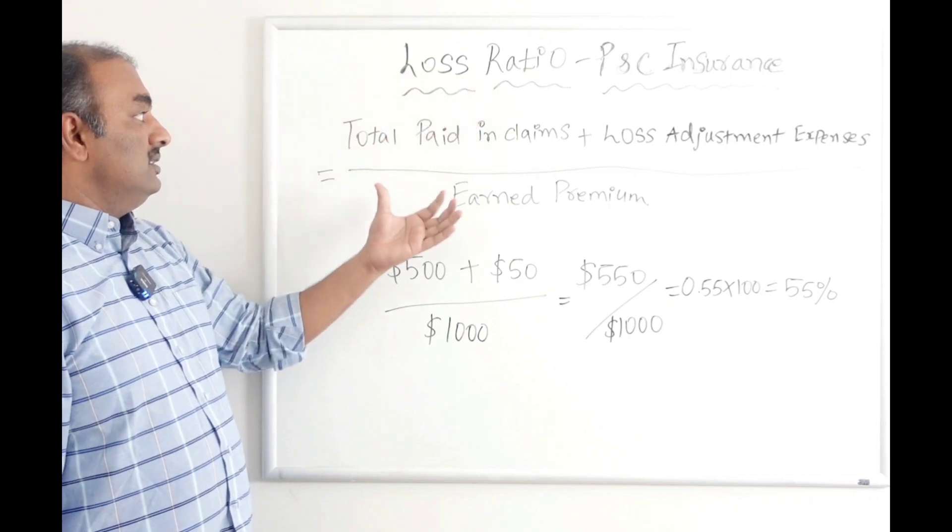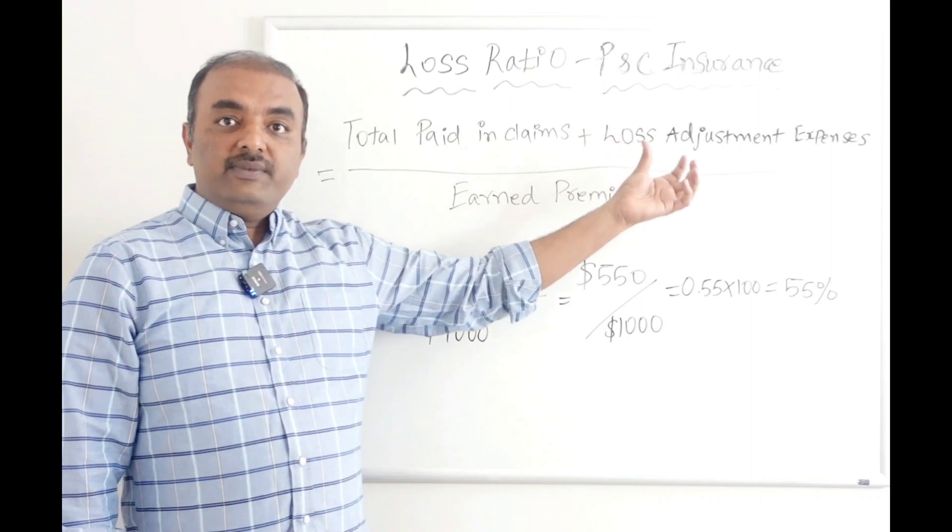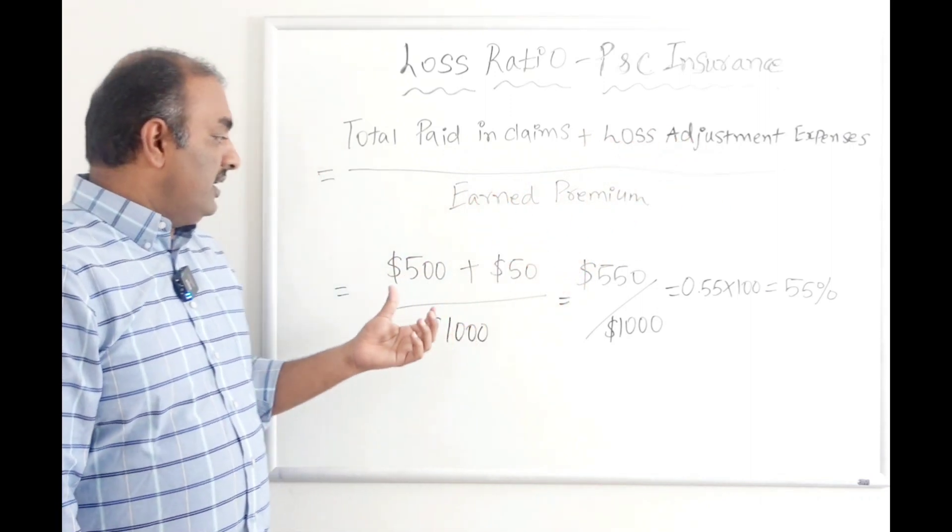So the way we calculate loss ratio is total amount that we paid in claims for the entire year plus any loss adjustment expense divided by earned premium.